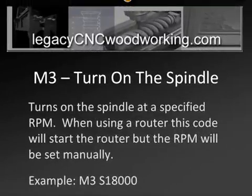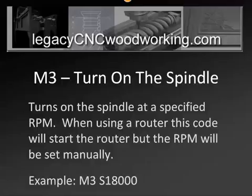Let's go into the M codes — these are the miscellaneous codes. M3 is going to turn on your spindle and it will turn it on at a specified RPM. You can look at the example down here at the bottom. M3 means turn on the spindle and set it at 18,000 RPM. S is for speed — it's 18,000 RPM.